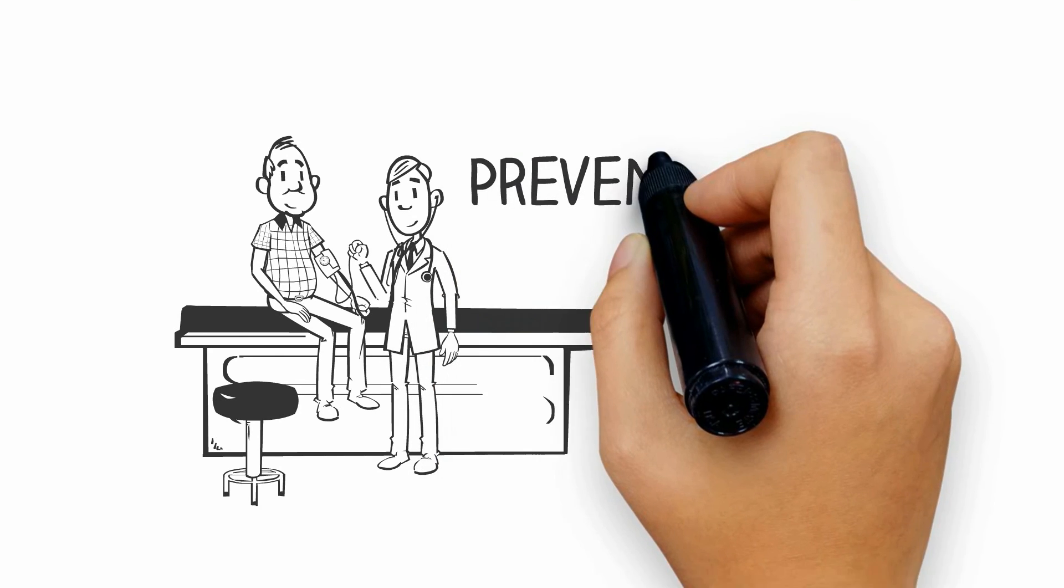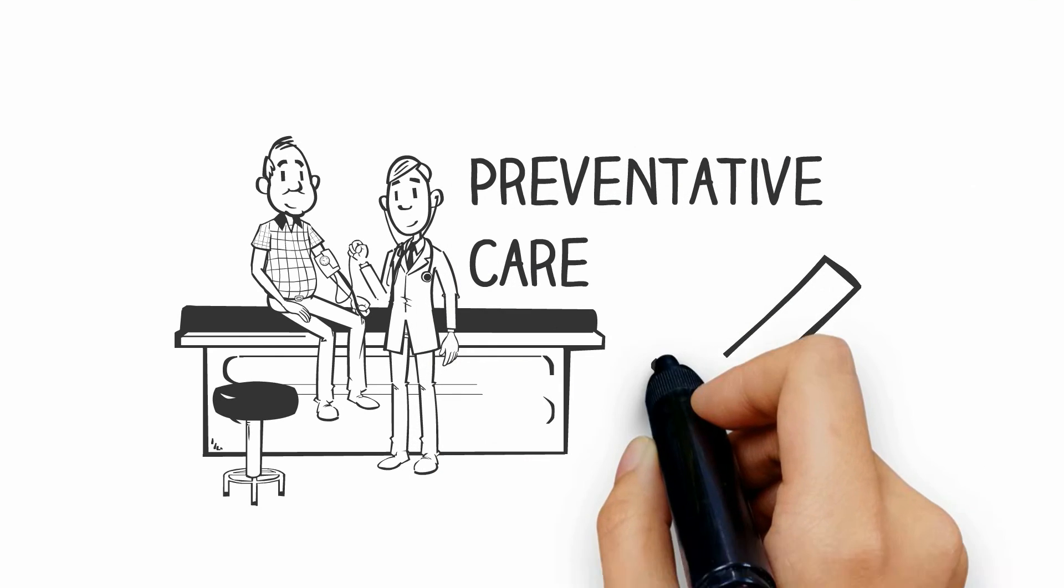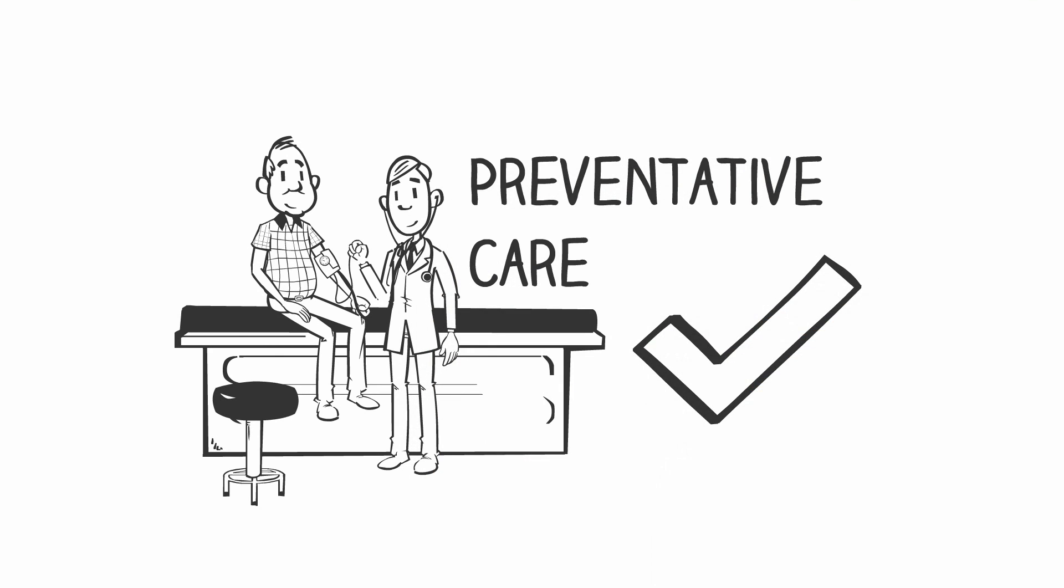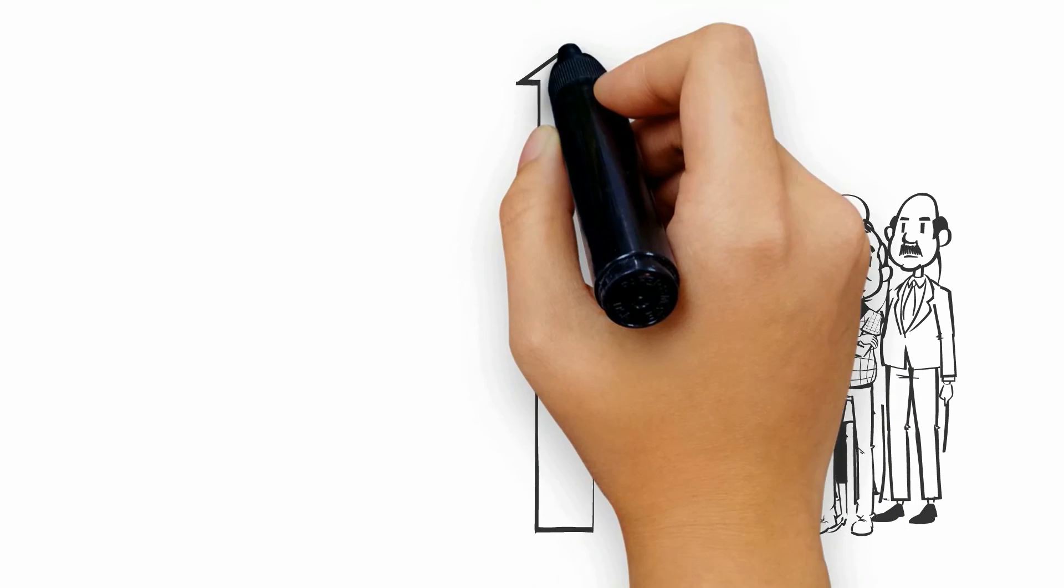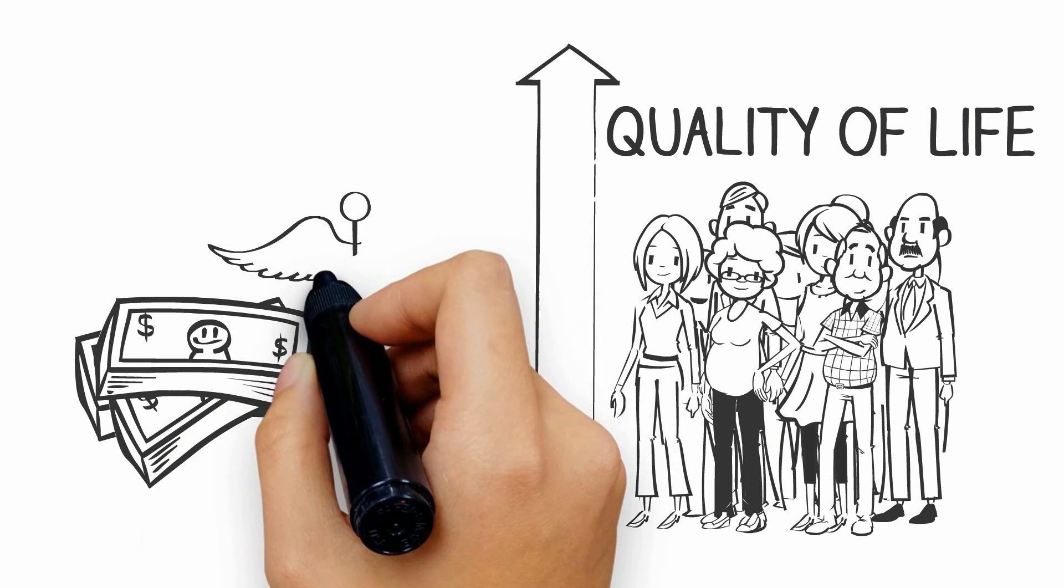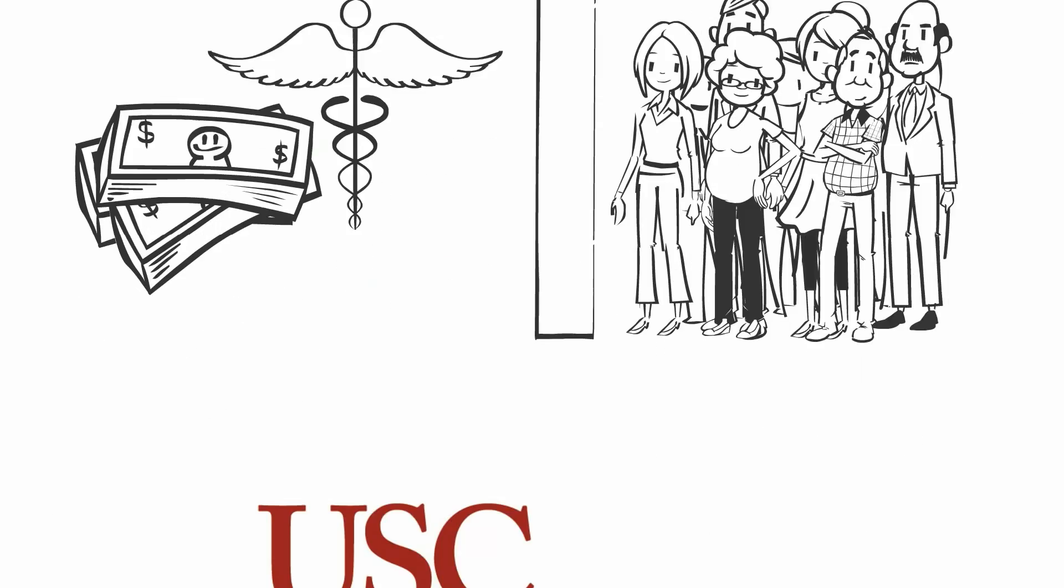Our findings lead us to believe that policymakers should focus on preventing disease rather than just treating it after it appears. Not only would this improve population health and the quality of life of older Americans, it could also save Medicare a lot of money.